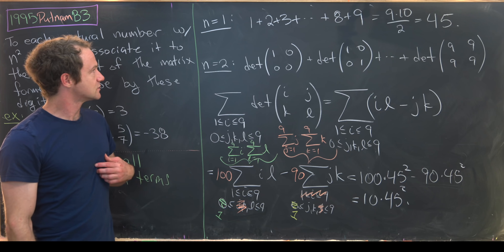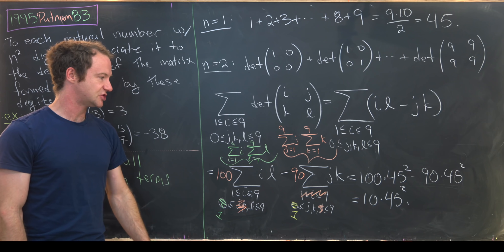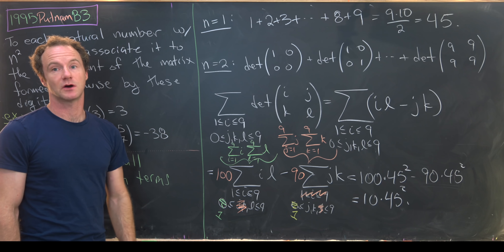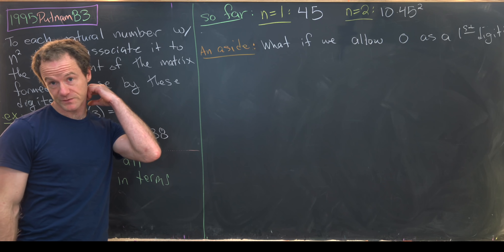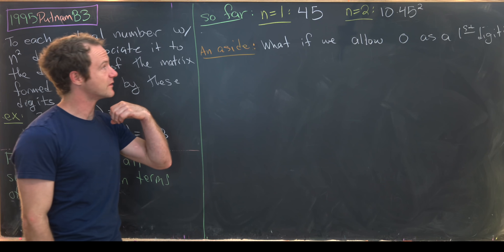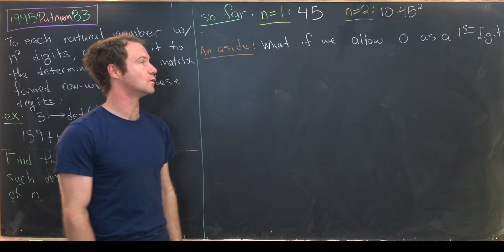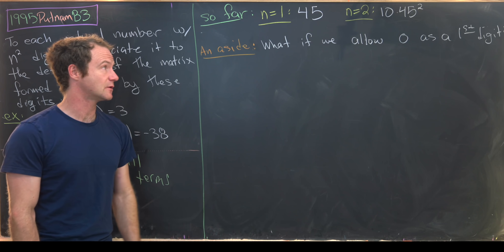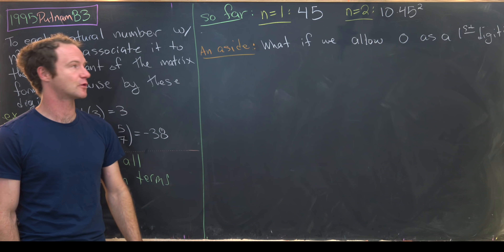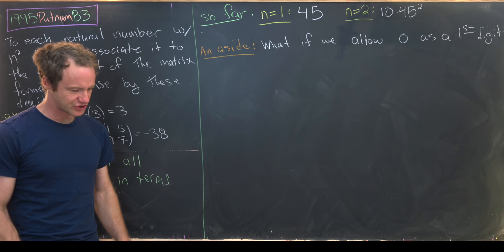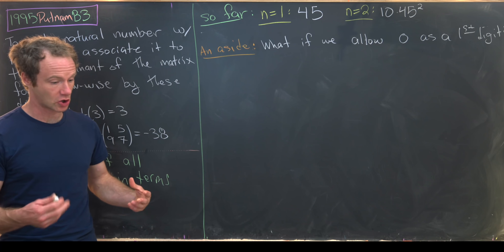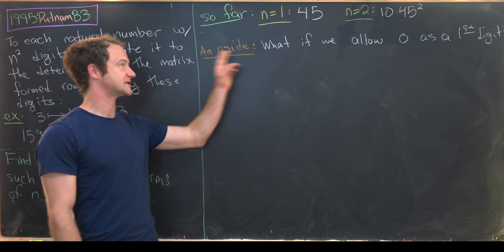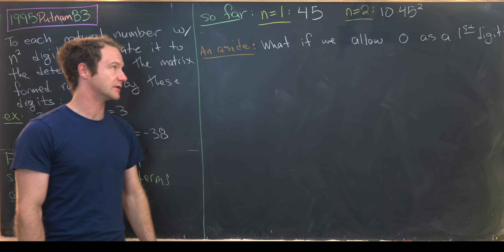So we've got solutions for the n=1 and n=2 cases: for n=1 the sum is 45, and for n=2 the sum is 10×45². Now before jumping into larger cases, I want to do a quick aside.